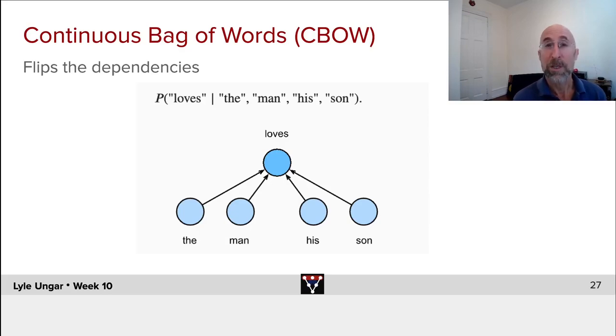So either skip-gram or continuous bag of words give very similar embeddings context-free. They're very efficient to compute. One can do these on large datasets and you can download really nice ones, which you'll get to do.